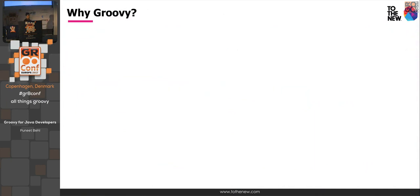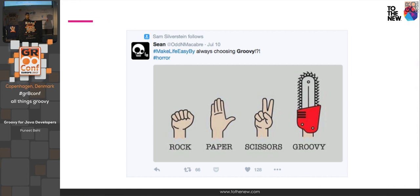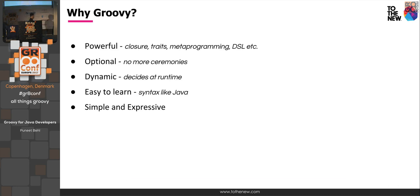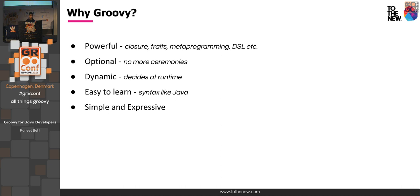So why should you use Groovy? The reasons are: Groovy has very powerful features like closure and traits — and while Java has support for Lambda functions, closures are much more than that. You can write DSLs very easily. You don't need to write a lot of boilerplate code like 'public static void main'. It has dynamic features like metaprogramming. It's easy to learn, has no new syntax, is similar to Java but removes some ceremonies, and is very simple and expressive.